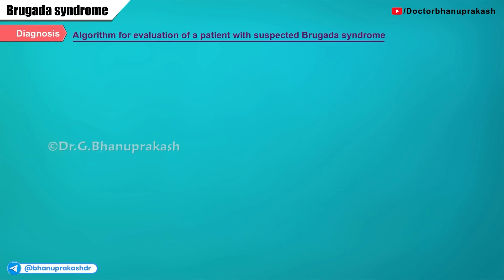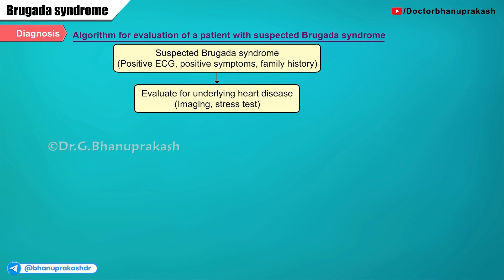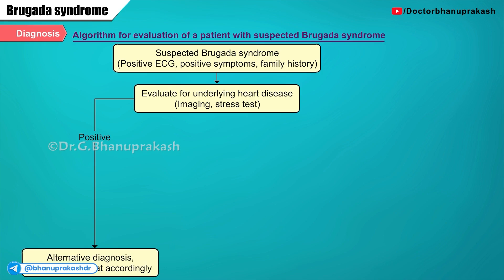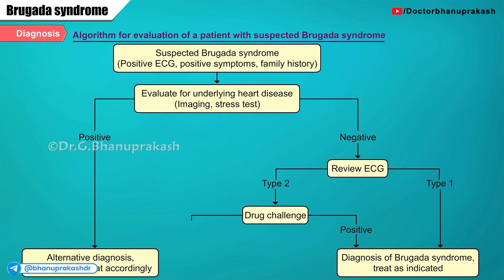Here's an algorithm for evaluation of a patient with suspected Brugada syndrome. A positive ECG, positive symptoms, and a family history all point towards Brugada syndrome and require evaluation for underlying heart disease with imaging and stress test. If positive, an alternative diagnosis should be made and treated accordingly. If negative, the ECG must be reviewed. If it shows a type 1 Brugada pattern with symptoms, a diagnosis of Brugada syndrome is made and treated accordingly. If a type 2 pattern is noted, the patient must be challenged with pharmacological therapies. If positive, Brugada syndrome is diagnosed; if negative, an alternative diagnosis is evaluated for and treated accordingly.